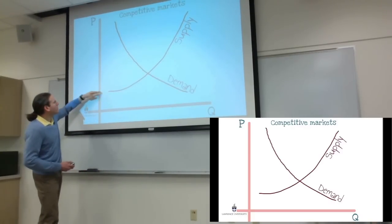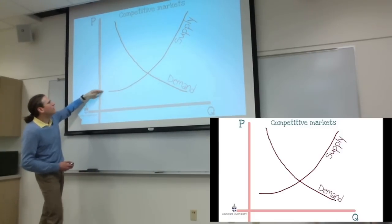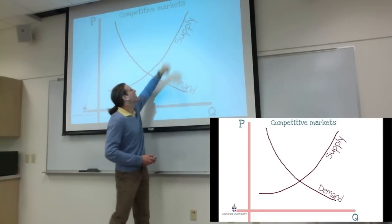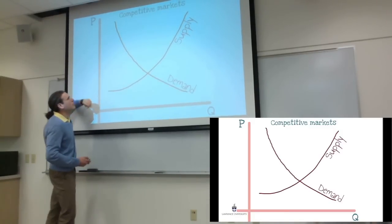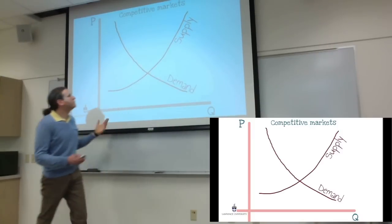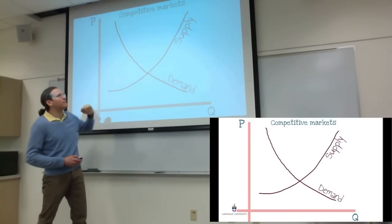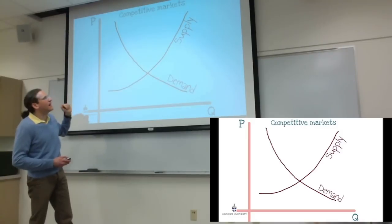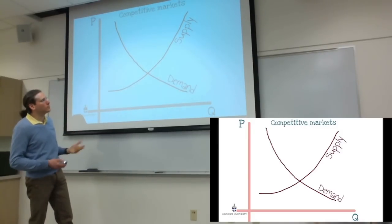Here is a low-cost supplier who is willing to supply some quantity even at a fairly low price. This supplier over here would be willing to supply only when the price is much higher. So every point here is a supplier saying: I'd be willing to supply if the price is high enough for me to make it profitable to supply the product I'm selling.